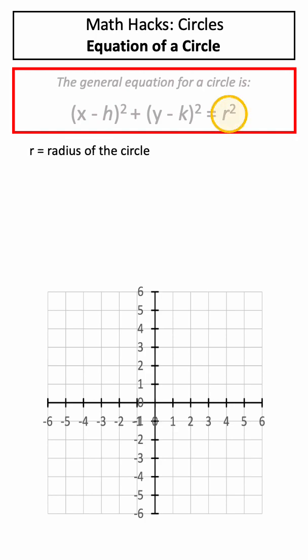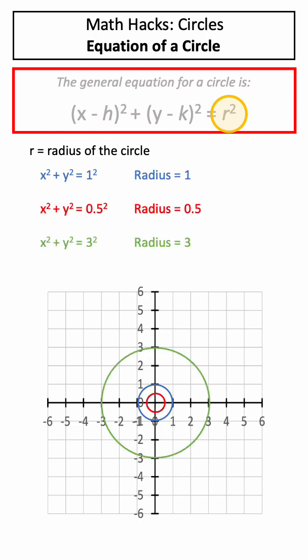r refers to the radius of a circle. The simplest circle has a radius of 1, however we can change this radius to draw different types of circles.